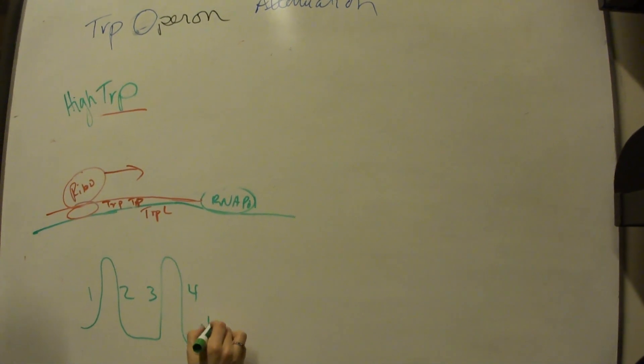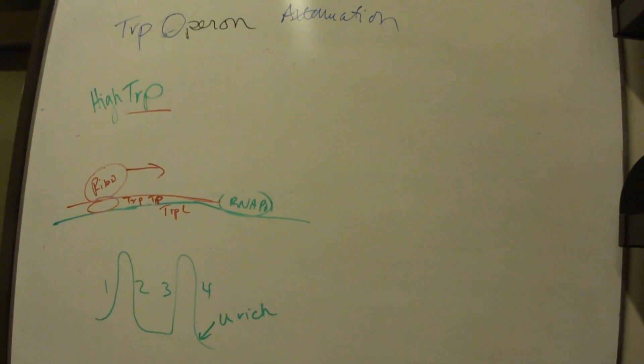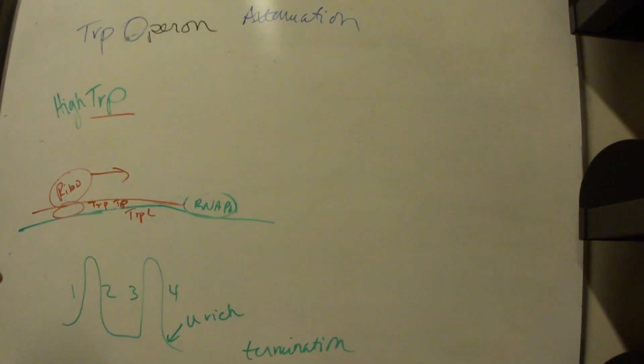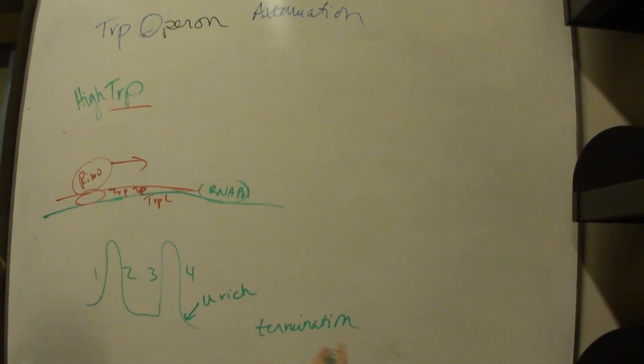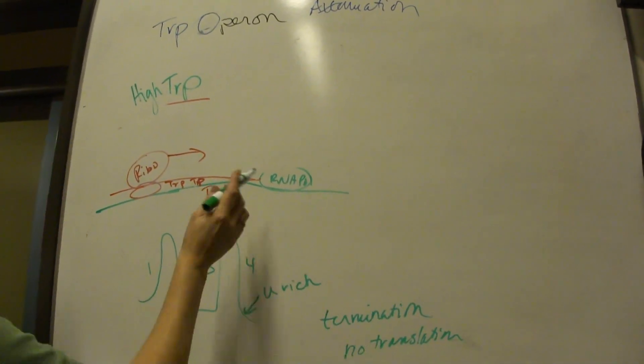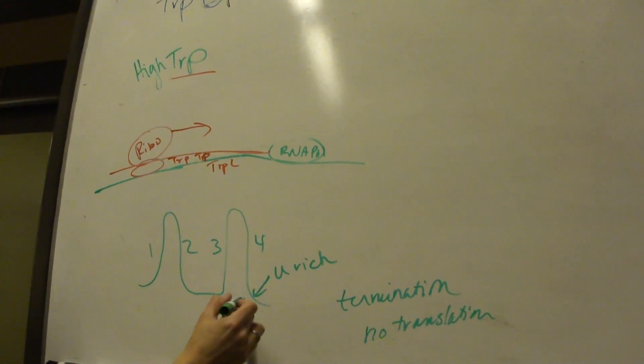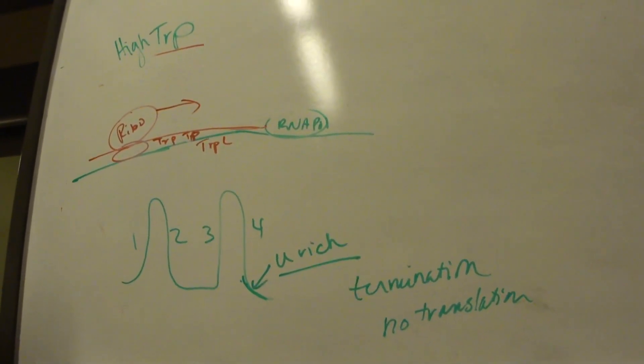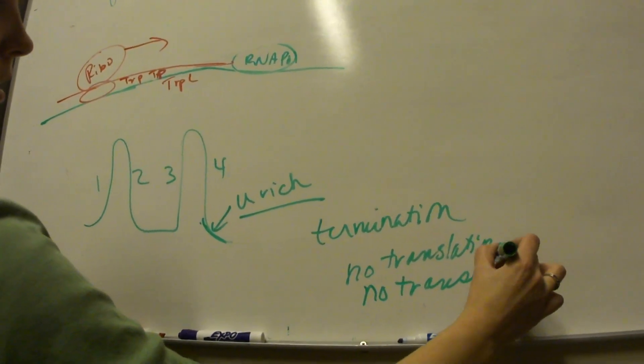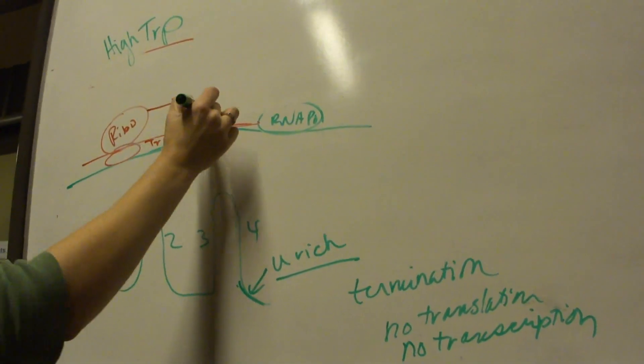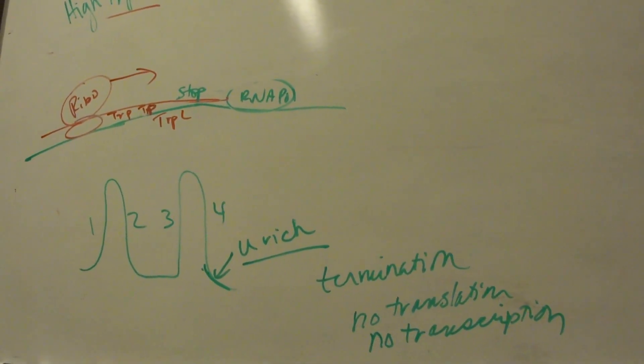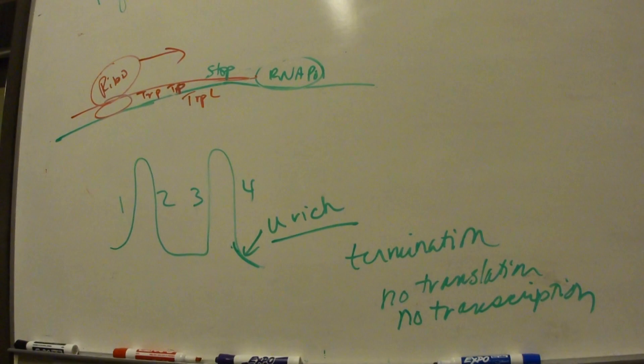Down here is a U-rich terminating sequence that causes termination of transcription. So you don't get any transcription or translation of downstream genes. The translation part stopped when it got to the stop codon. So when you get the 1-2-3-4 stem loop, it means termination. That's the important part.